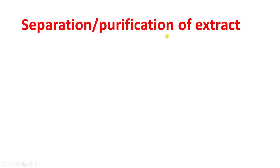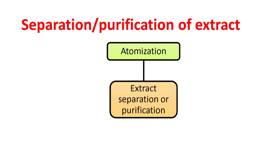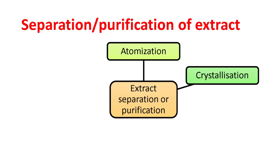The next very important part for any extraction technique is separation or purification of the extract. There are several techniques for purification. First is atomization: atomization mainly involves the evaporation of the extraction solvent, which leaves behind solid particles. The extract is sprayed into a hollow column in which air is blown, so that air evaporates the solvent and the solid particles are deposited in the column. This is called atomization.